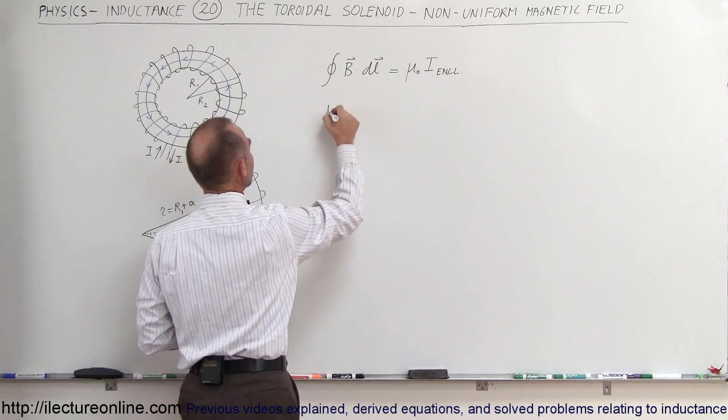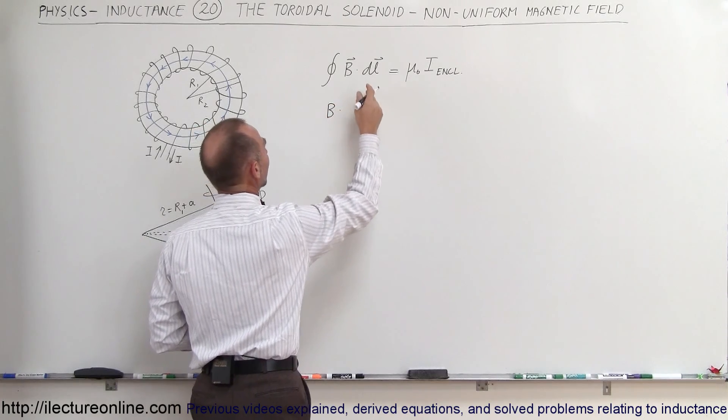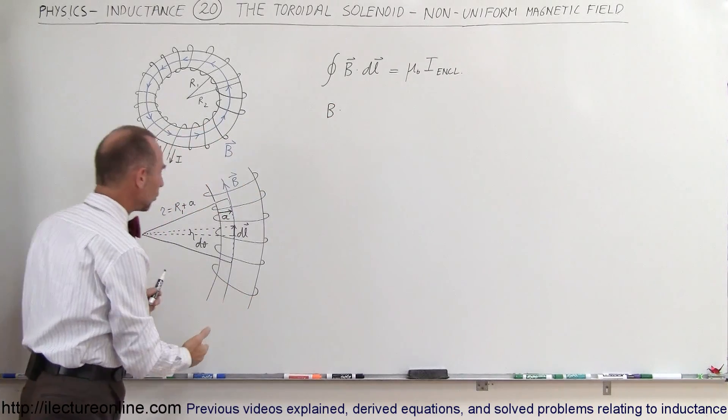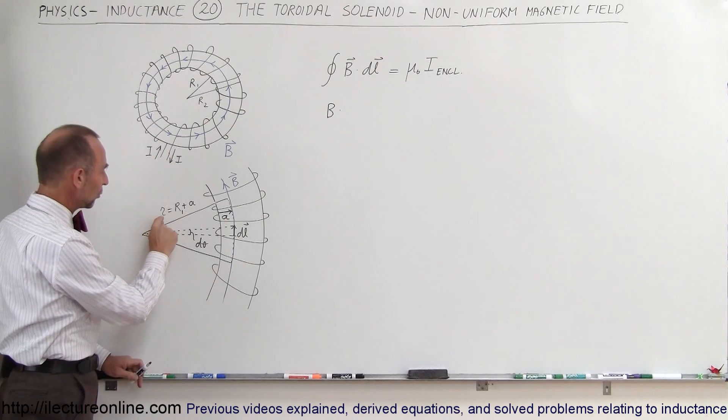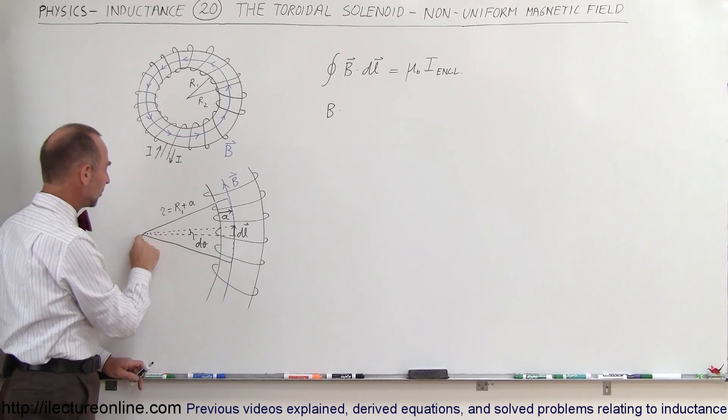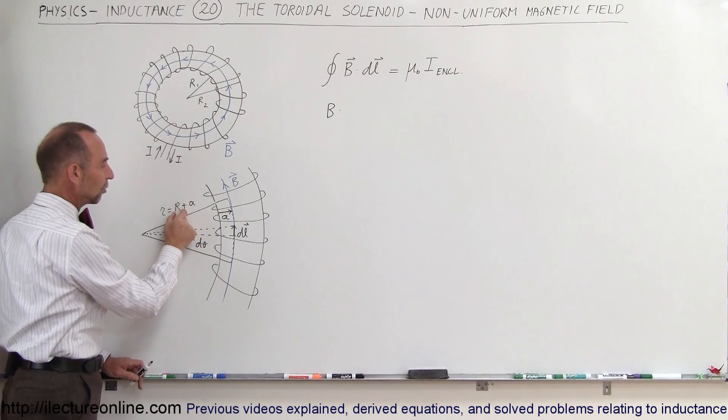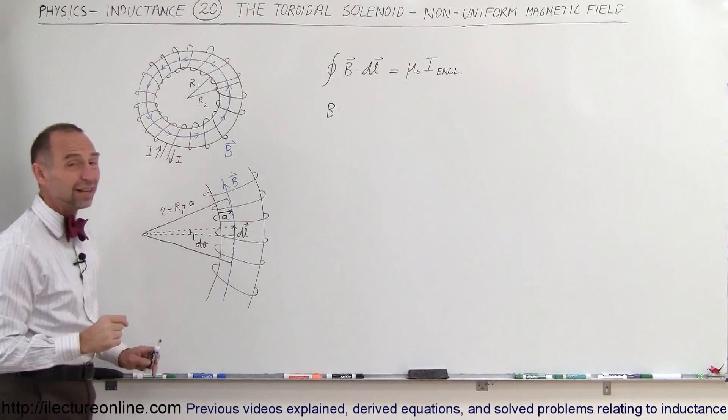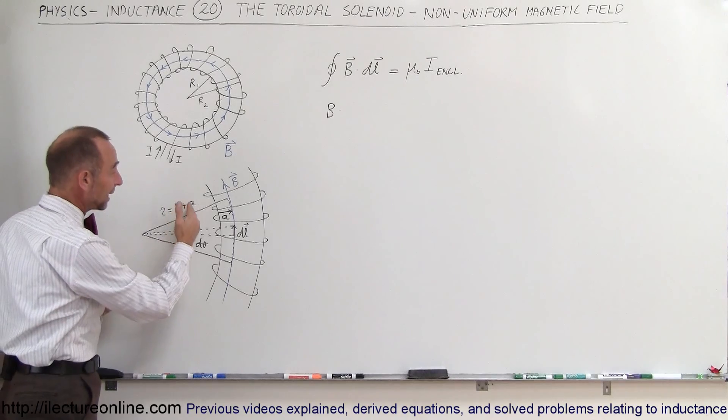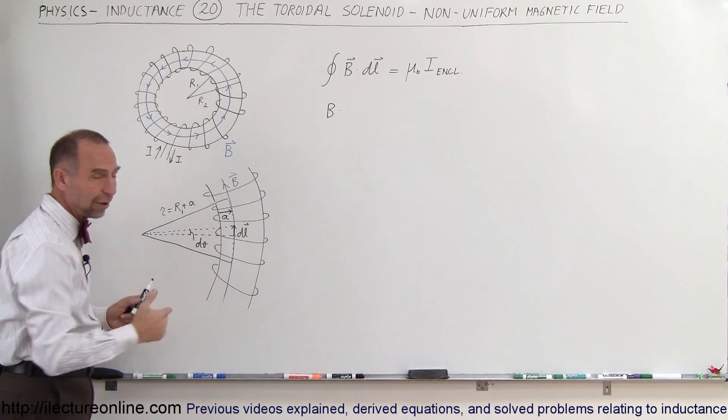So here we're going to have B times DL the path length integrated all the way around. Notice that we're going to use small r as distance from there to the B field to the magnetic field which is the inner radius of the solenoid plus the distance out to there. And notice we'll write in such a way that we can pick A as any distance in between here to find the magnetic field anywhere inside the solenoid.